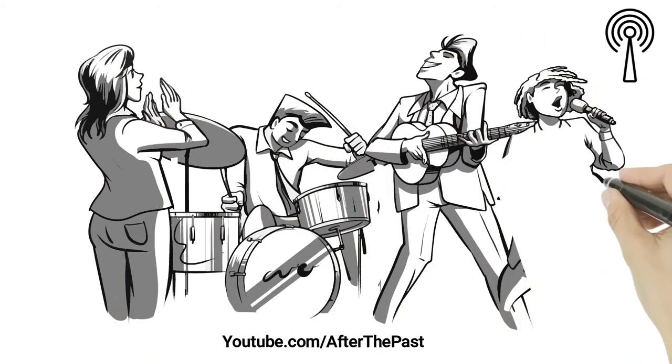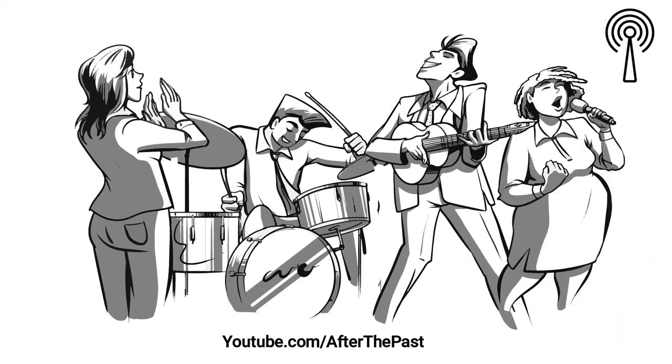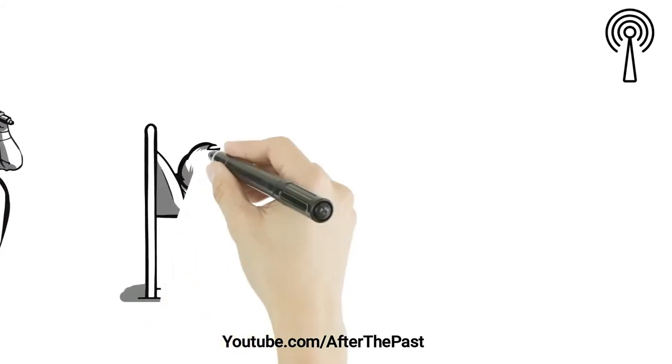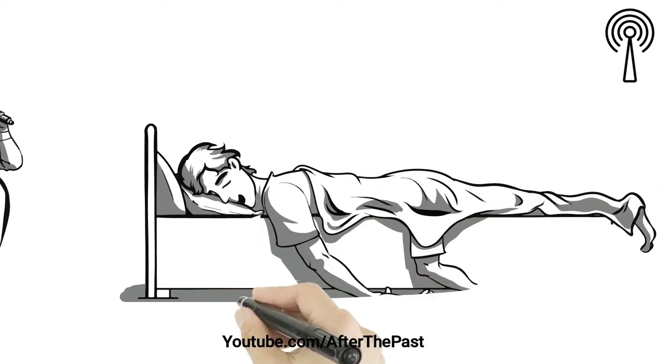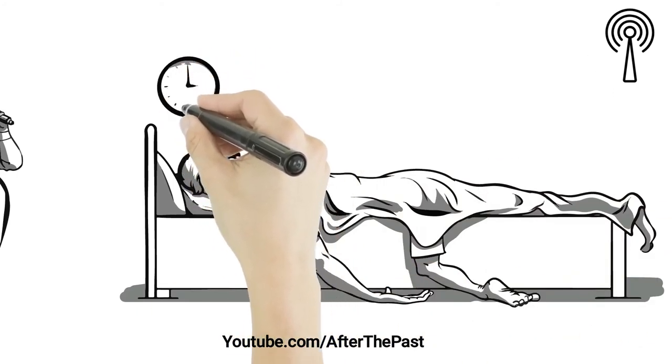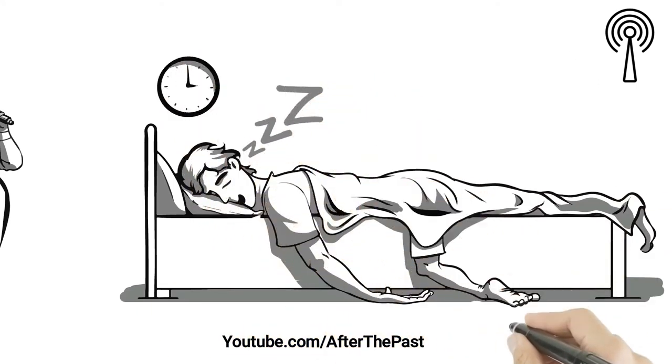Less than seven hours of sleep per night may shorten your lifespan, so make sure you're getting enough Z's.